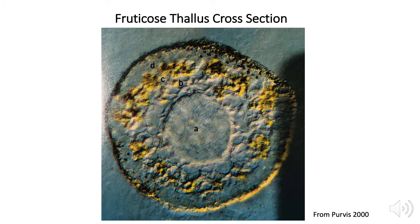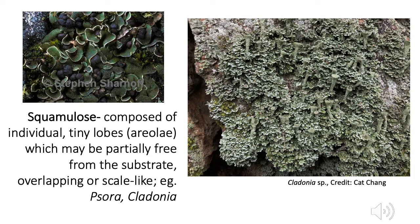In the cross-section of a fruticose lichen, they look a little different even though they have the same major parts. Instead of the cortex being on the top and bottom, it goes all the way around the outside, with all the other layers on the inside. Some species are hollow, but others have a central cord-like axis — like in Usnea. There are also a couple more important growth forms besides those big three. Squamulose describes a variant on the foliose form where the lobes are very small and overlapping, sort of like scales. You'll most often see this combined with podetia, but you can also see it on its own, as in species like Sora.